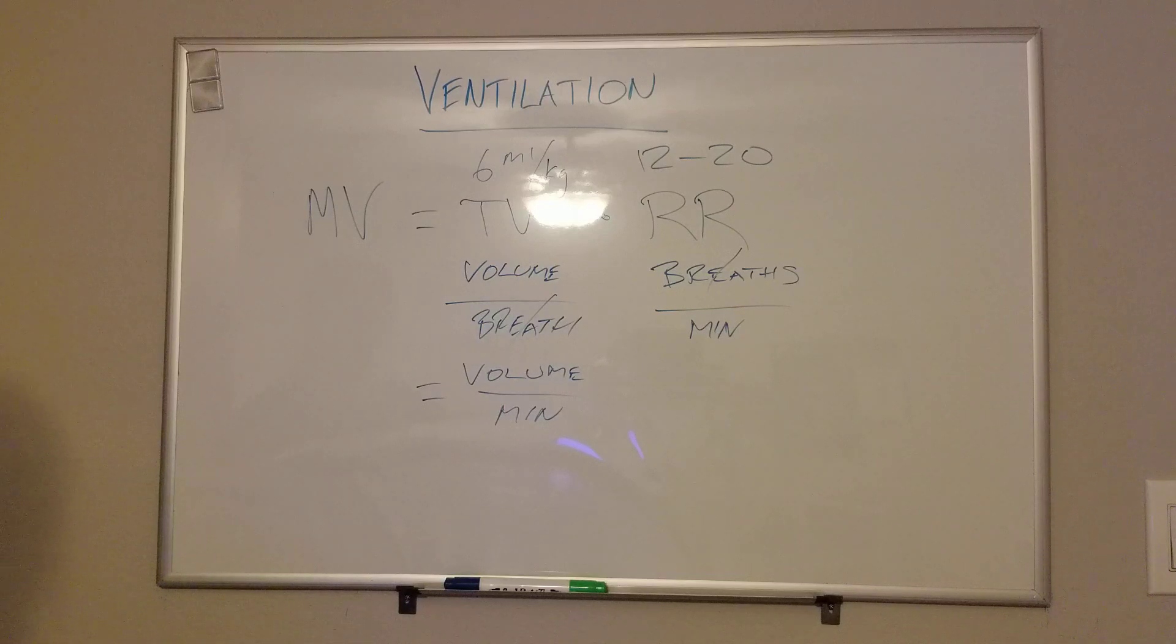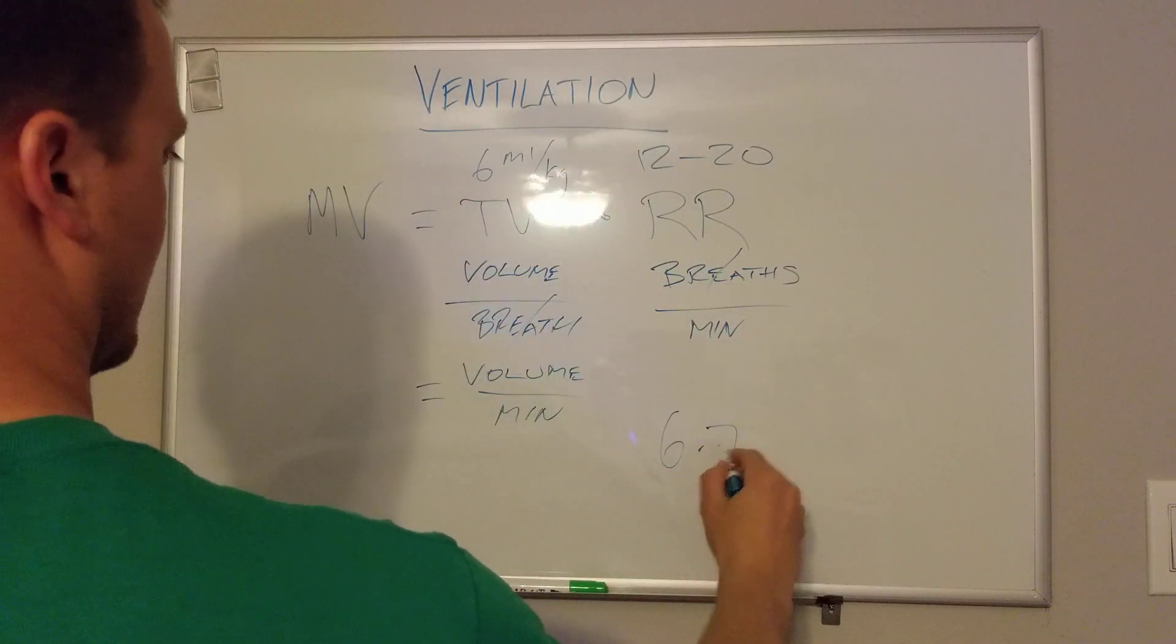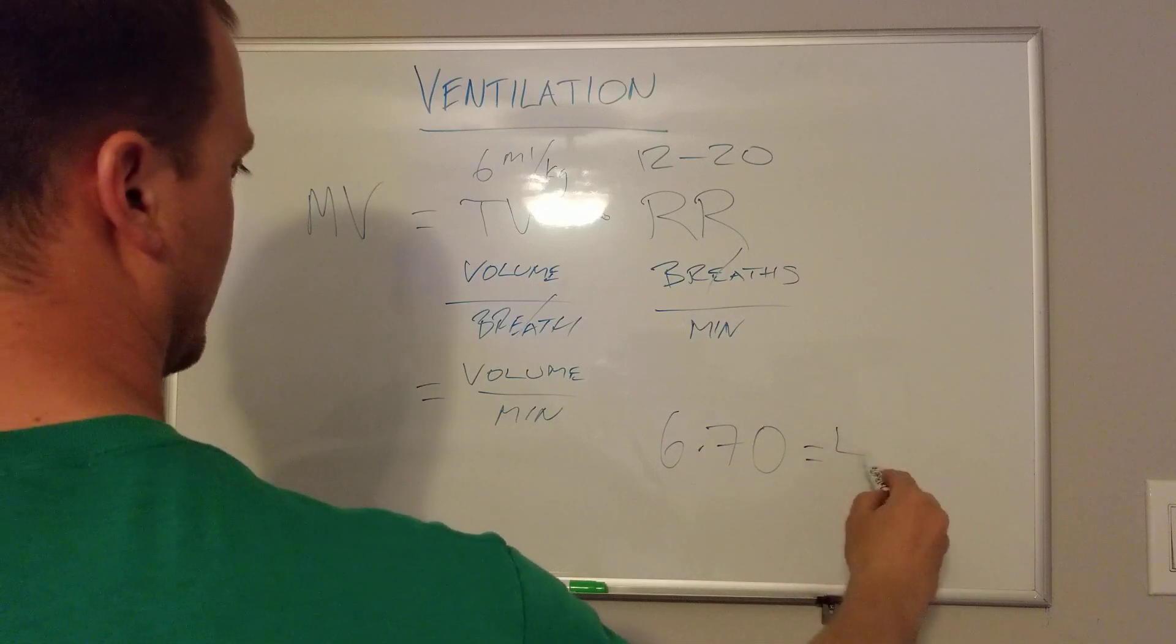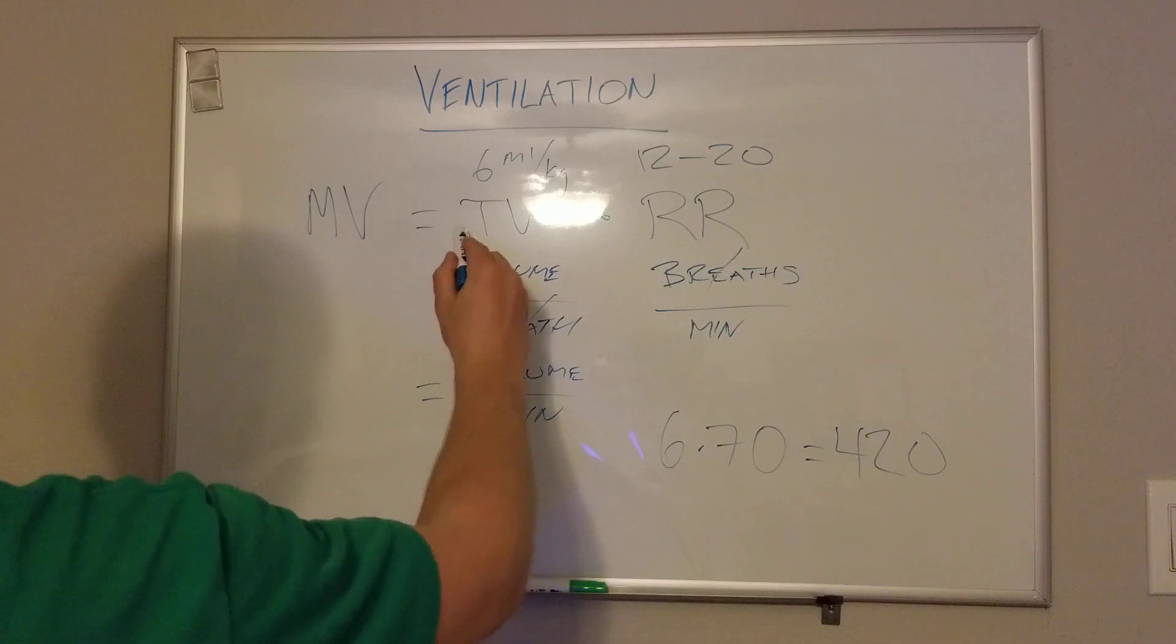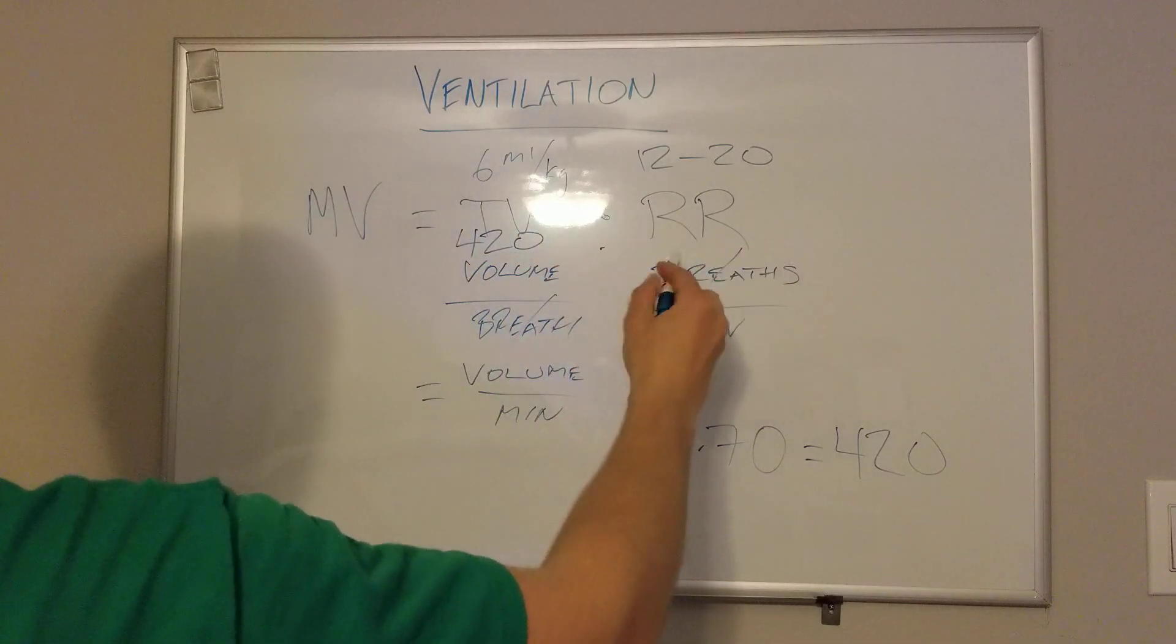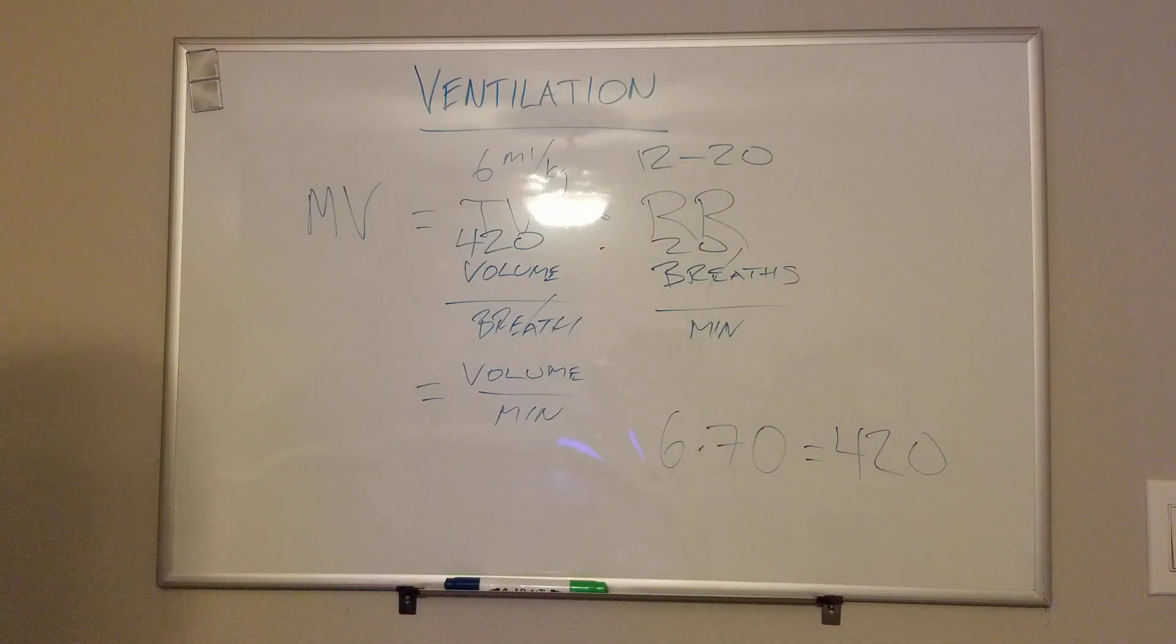So if someone's a 70 kilogram male, you do six times 70, a 70 kilogram male should have a tidal volume in the ballpark of 420 milliliters. So if we took 400, just for completion sake, we'll say that this person's tidal volume is 420 and the respiratory rate is 20. Now they're a little tachypneic. You can multiply that out in 8,400 or 8.4 liters would be this person's minute ventilation.